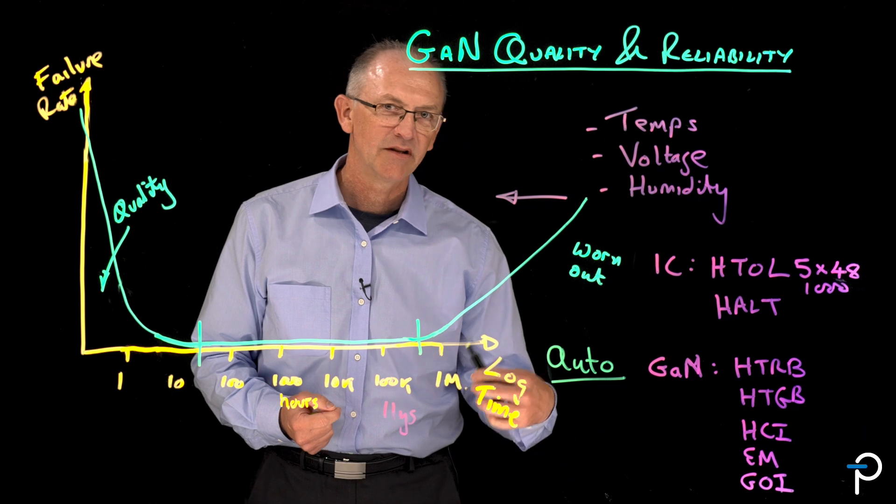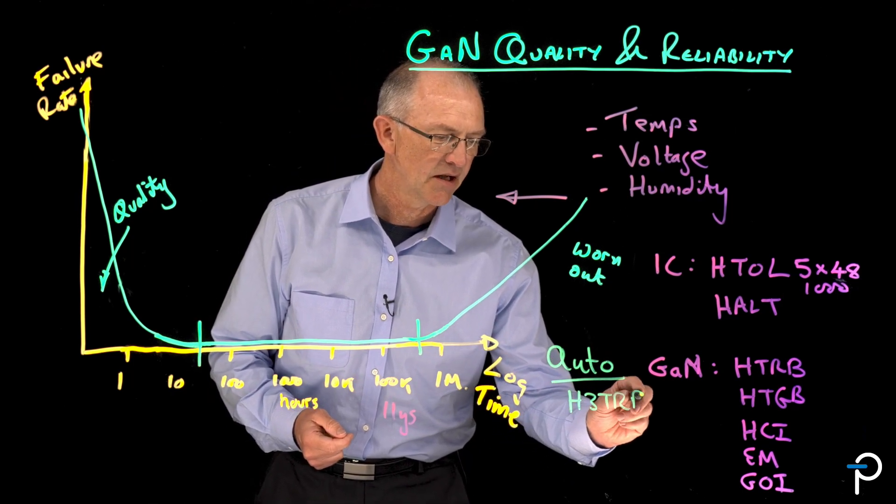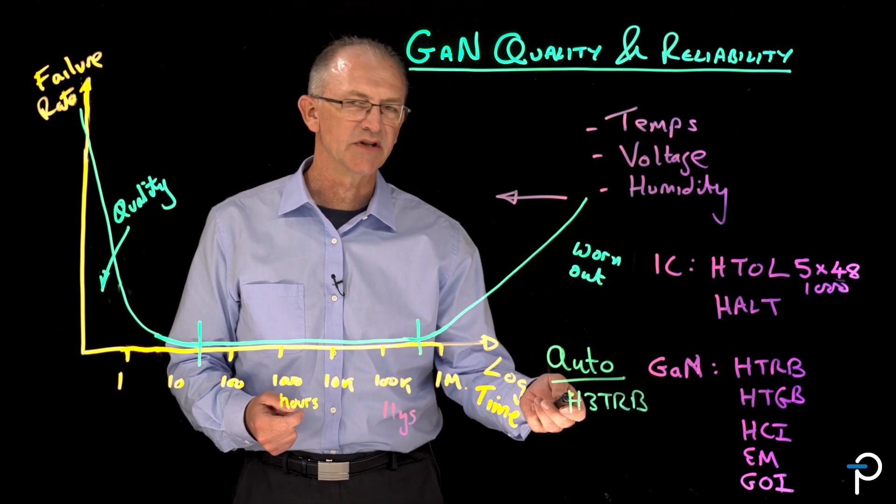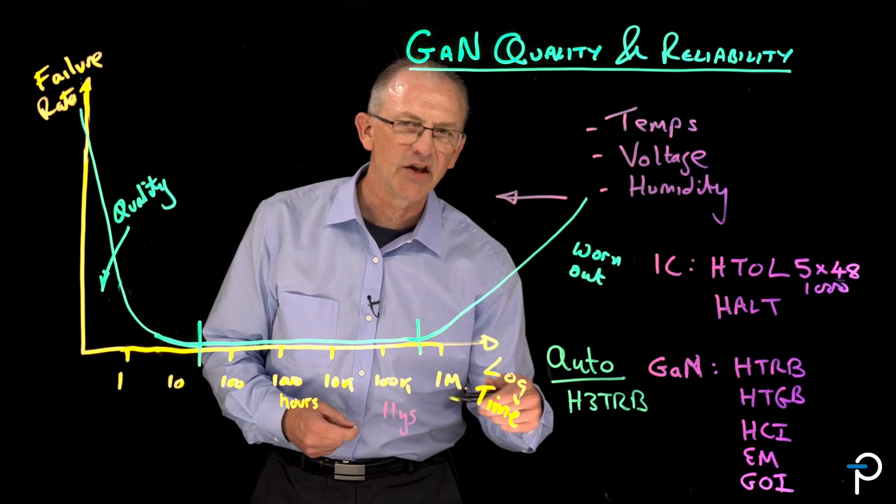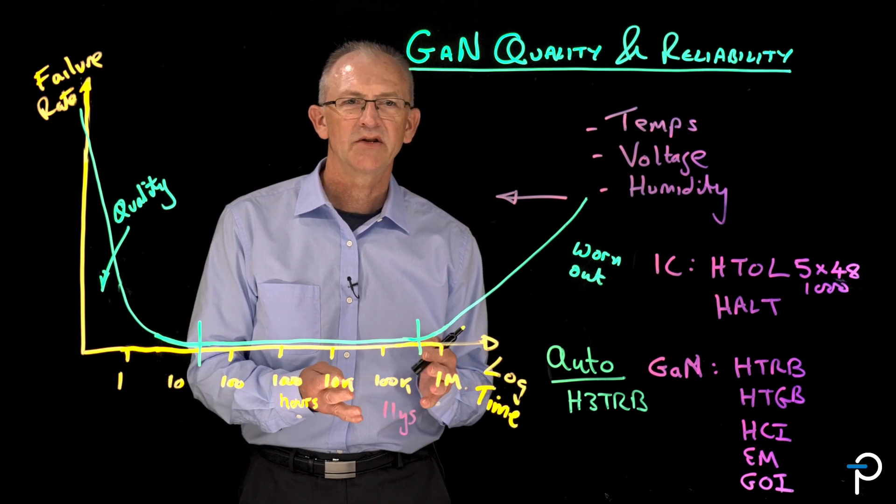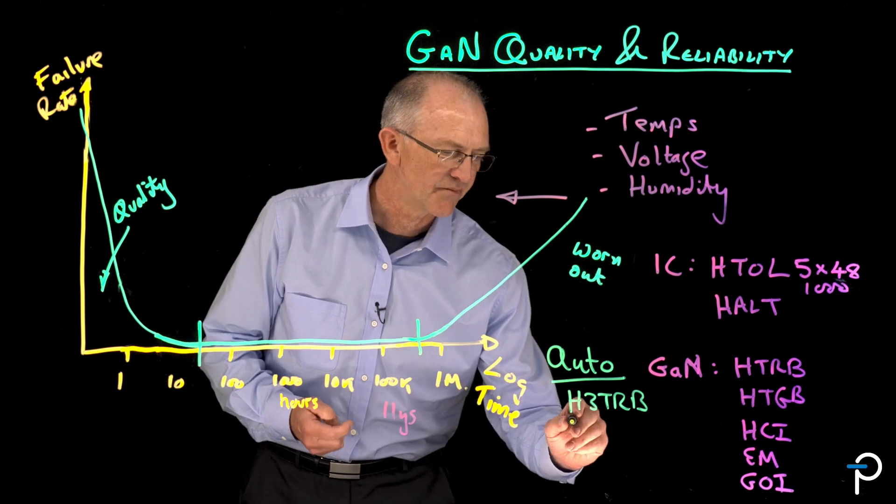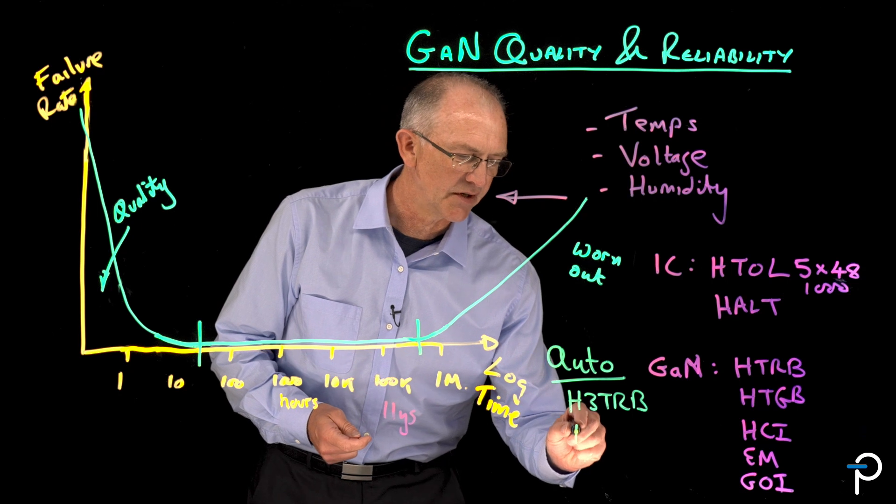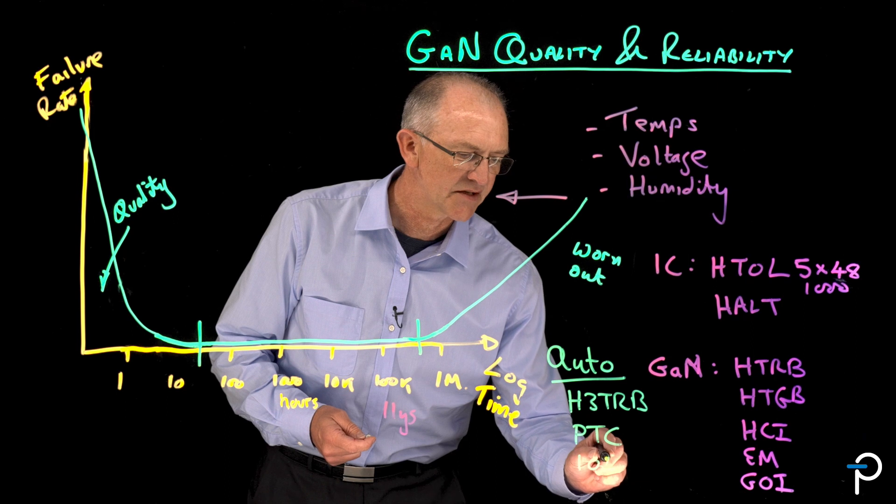And what we run primarily for automotive is H3TRB. And this is a test that further increases the humidity and temperature over the standard HTRB. And then we run a series of tests that are designed to switch the part on and off multiple times to prove that it's immune to thermal shock from being switched on. And that's power temperature cycling and intermittent op life testing.